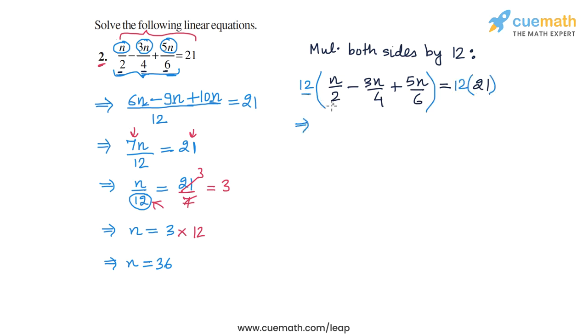Now let's see what we get. So 12 into n/2 will be 6n, minus 12 into 3n/4 will be minus 9n. And then 12 into 5n/6 will be 10n.